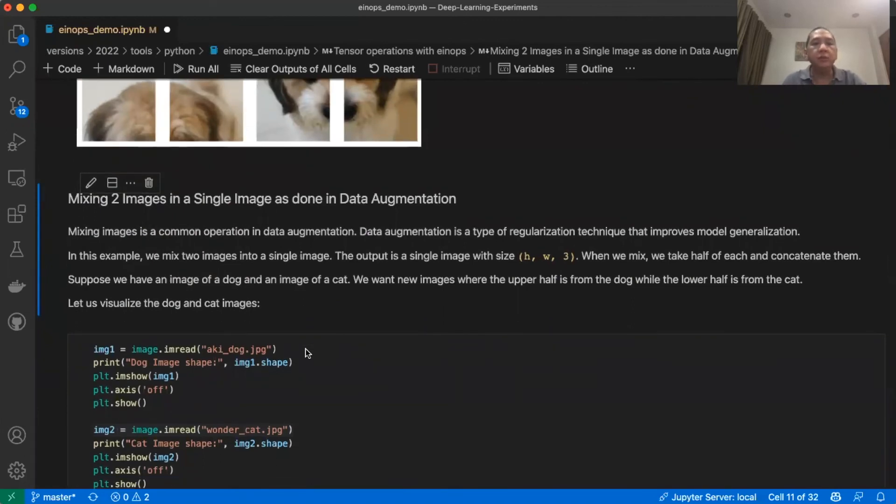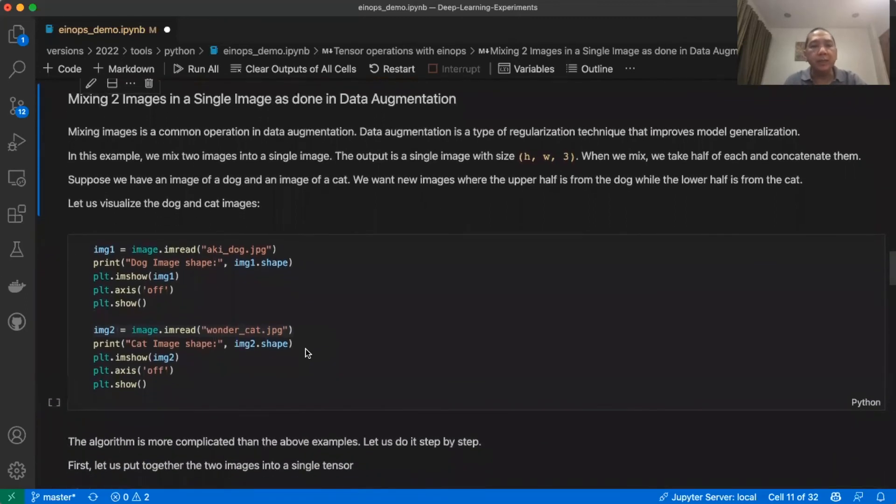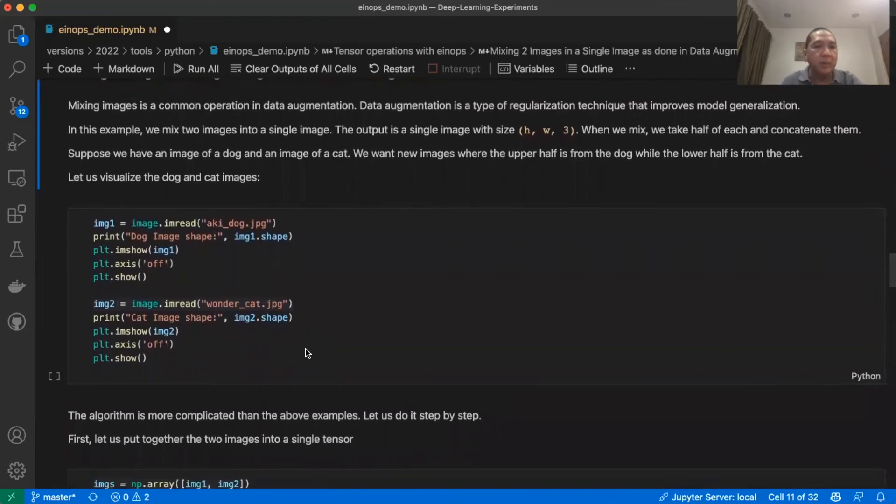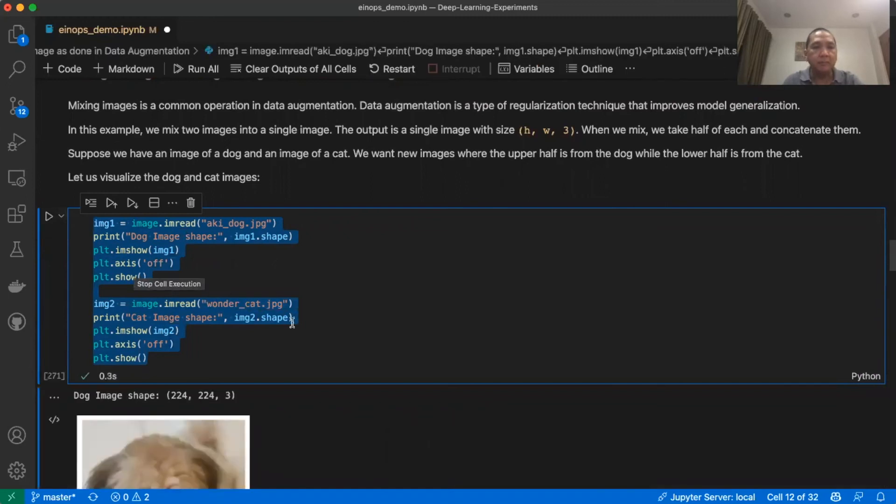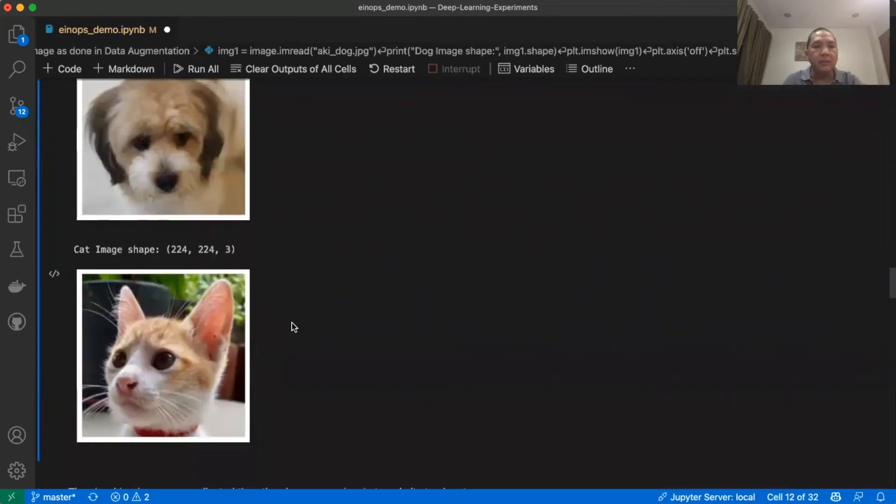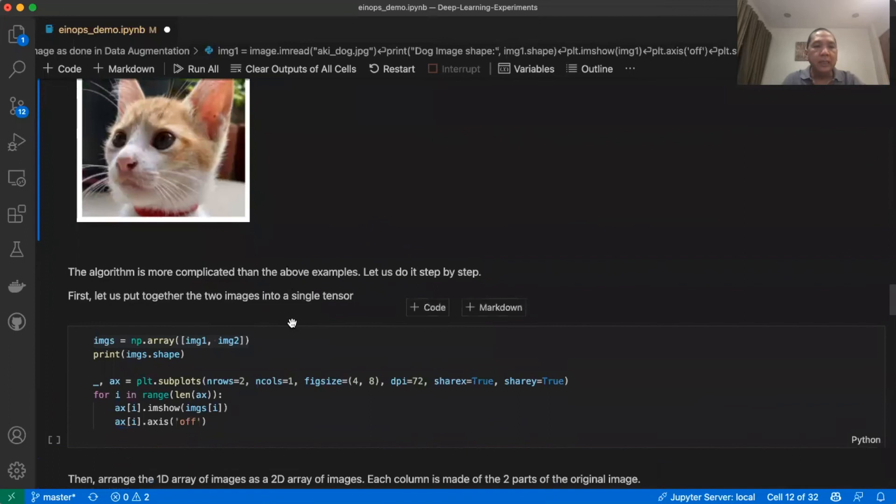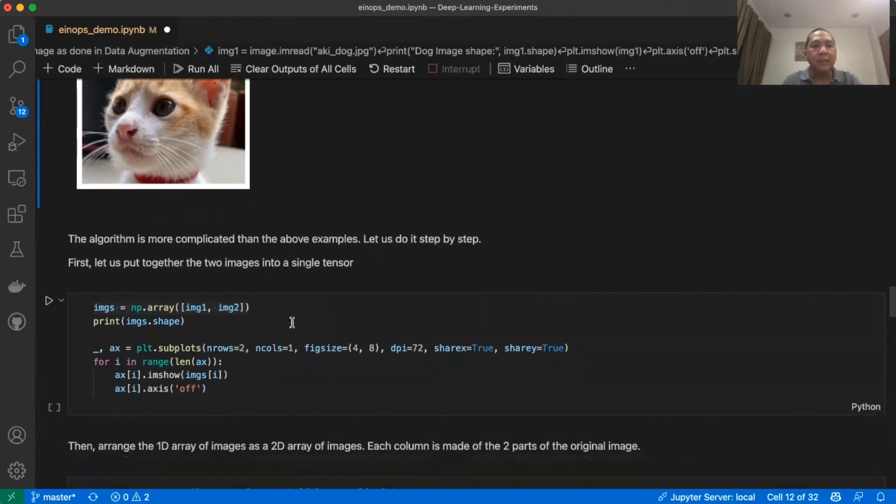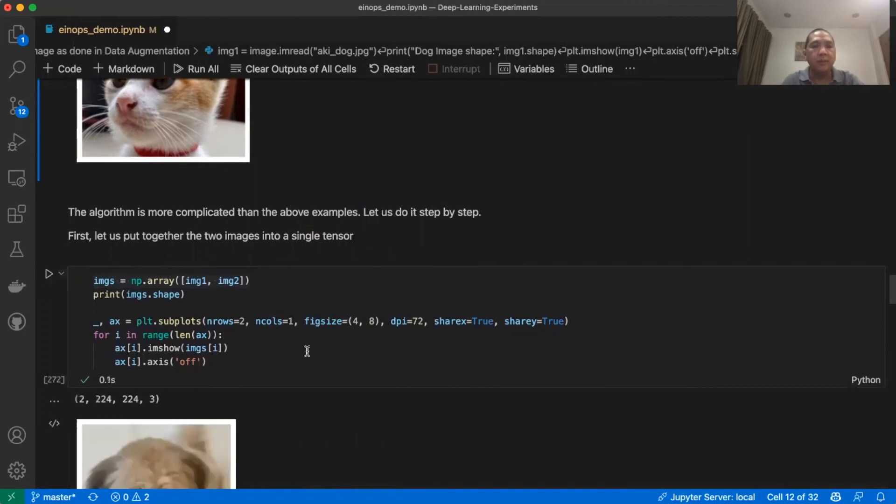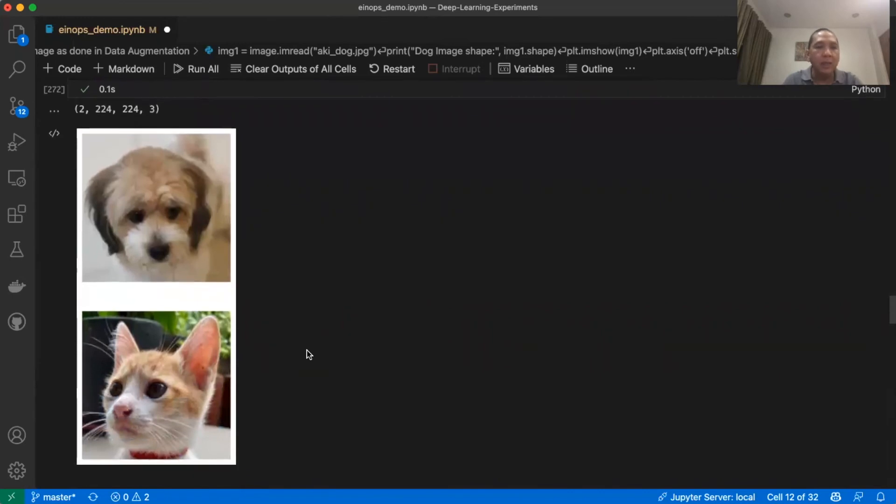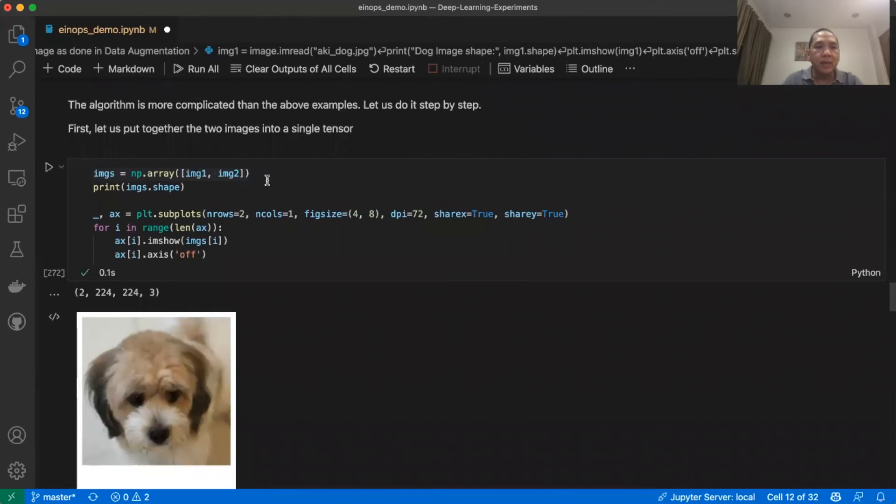In the next example, we will mix two images into a single image as done in data augmentation. Let us first visualize the two images, an image of a dog and an image of a cat. This code will load the two images and display them. This is the image of the dog and this is the image of the cat. The algorithm of mixing two images to form one image is actually complicated. So we will do it step by step. First, let us put together the two images into a single tensor. And then let's display the two images. These are the two images when combined into a single tensor. This is done by using NP array.